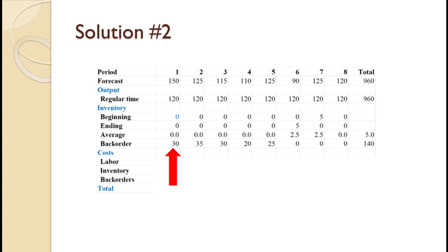These back orders are the difference between this example and the first example. When demand is lower at the beginning, early production is higher than demand and you are building up inventory before you need it. When demand is higher at the beginning, you start off with inadequate levels of inventory and must use back orders. If back orders are not allowed in this scenario, then level production is not possible. Instead, you must produce at higher levels in the beginning and then level off later. Dealing with that is beyond the scope of an introductory operations course.